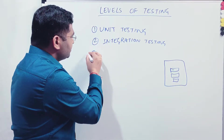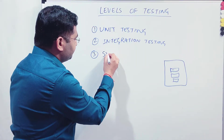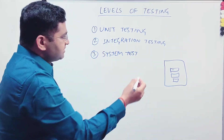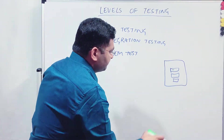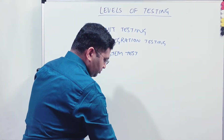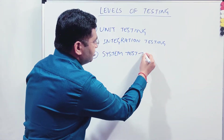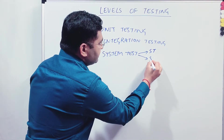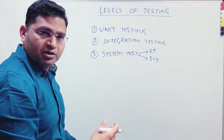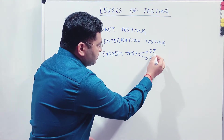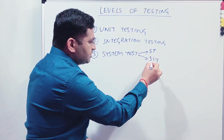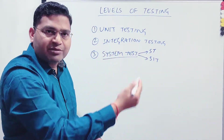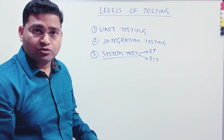The third level of testing is system testing. In system testing, you can categorize it into two mainly: ST (system test) and SIT (system integration test), which is very popular. You need to understand the difference between system test and system integration test. Within system testing, these two phases are possible depending on how complex your software is.